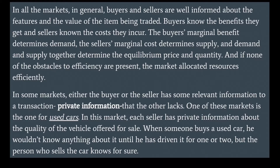In all markets in general, buyers and sellers are well informed about the features and the value of the item being traded. Buyers know the benefits they get and sellers know the cost they incur. The buyer's marginal benefit determines demand, the seller's marginal cost determines supply, and demand and supply together determine the equilibrium price and quantity. If none of the obstacles to efficiency are present, the market allocates resources efficiently.